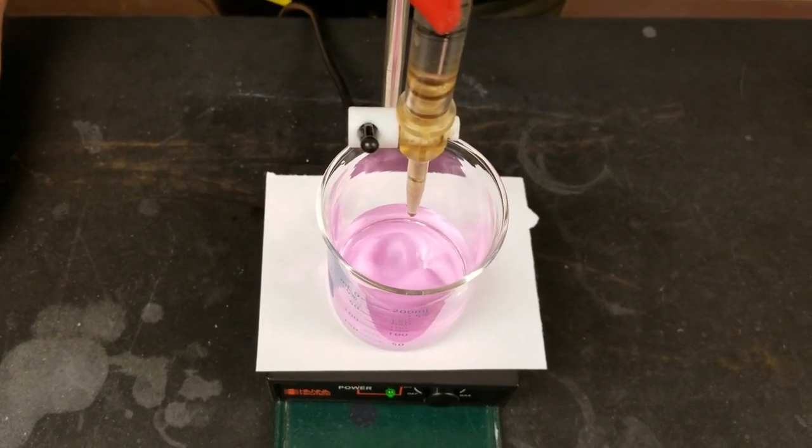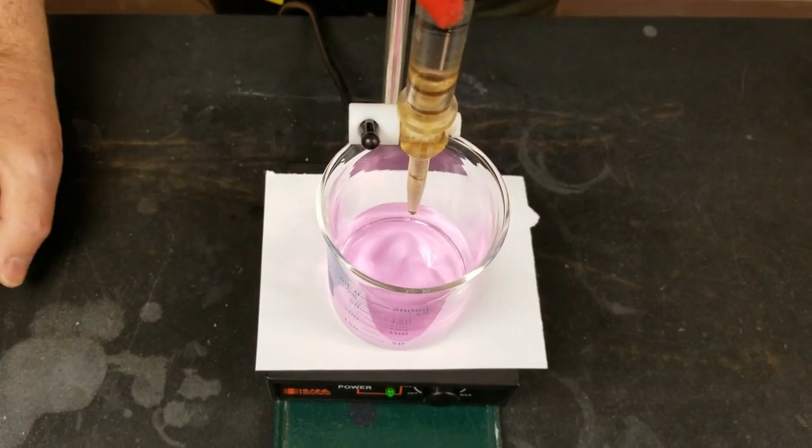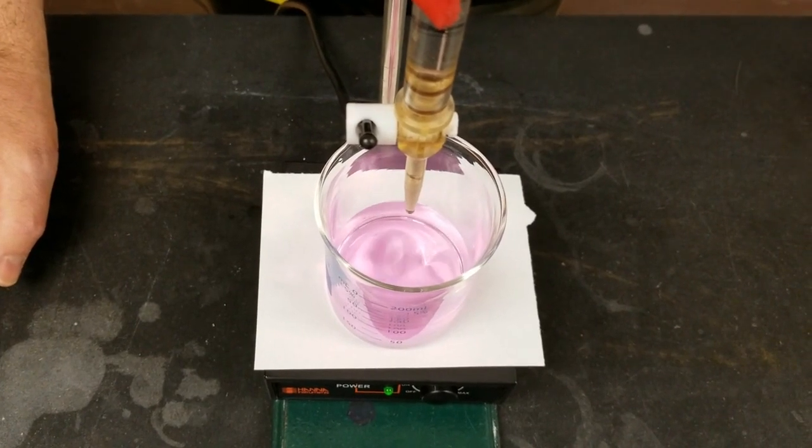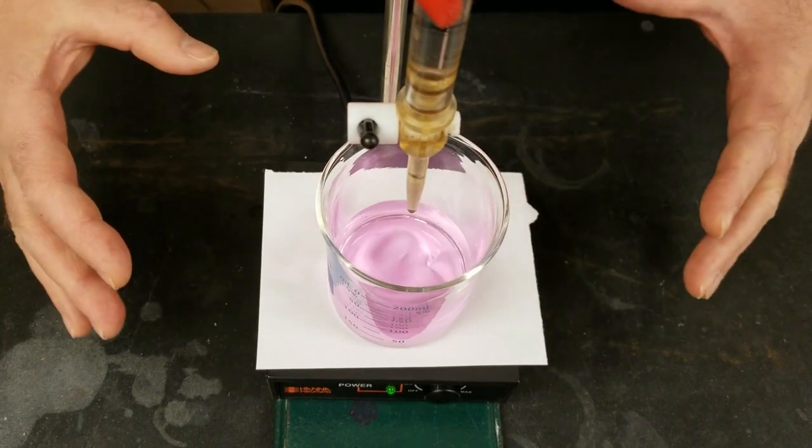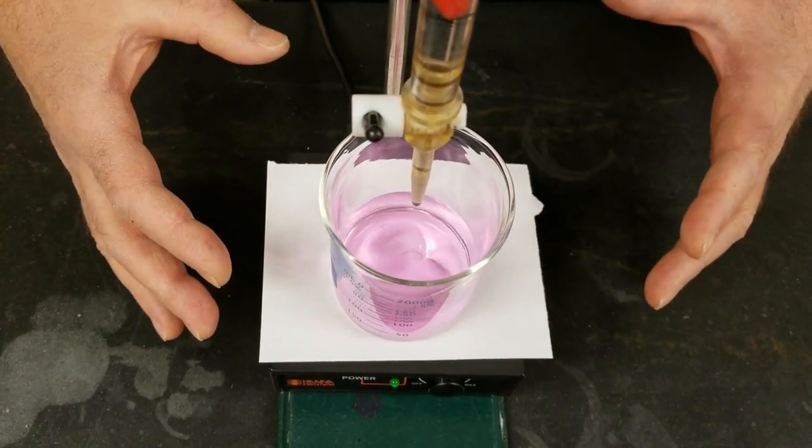And you want the phenolphthalein color, the indicator color, to last for at least 30 seconds. If it goes away in that 30 second window, you're not quite at the end point. The end point is when the indicator changes color. The indicator, the PPN, is a weaker acid than the KHP.